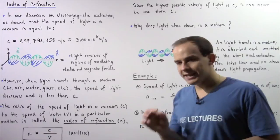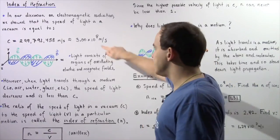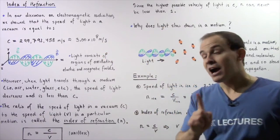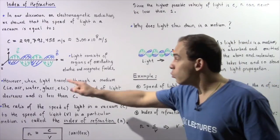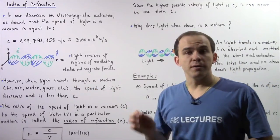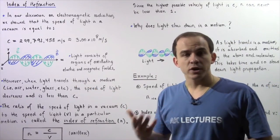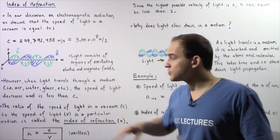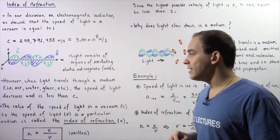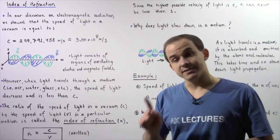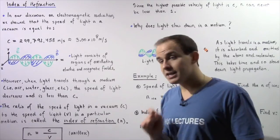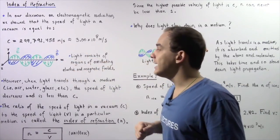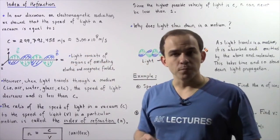The speed of light inside a vacuum is given by c. However, when light travels through a medium — for example, air, water, or glass — the speed of light decreases and is less than c, less than the speed of light inside a vacuum.